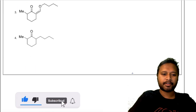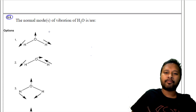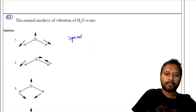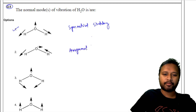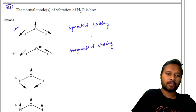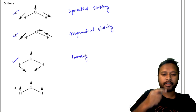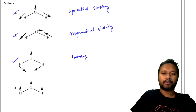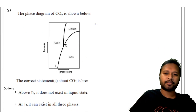The first MSQ was question number 8, from physical chemistry. The question asks about the normal modes of vibration of water (H₂O). The first mode shown is symmetric stretching — that is a vibrational mode of water. The second mode is asymmetric stretching — also a normal mode of vibration. The third option is the bending mode — also one of the modes of vibration. The fourth option is not any type of vibration for the water molecule. So the correct answers are options one, two, and three.